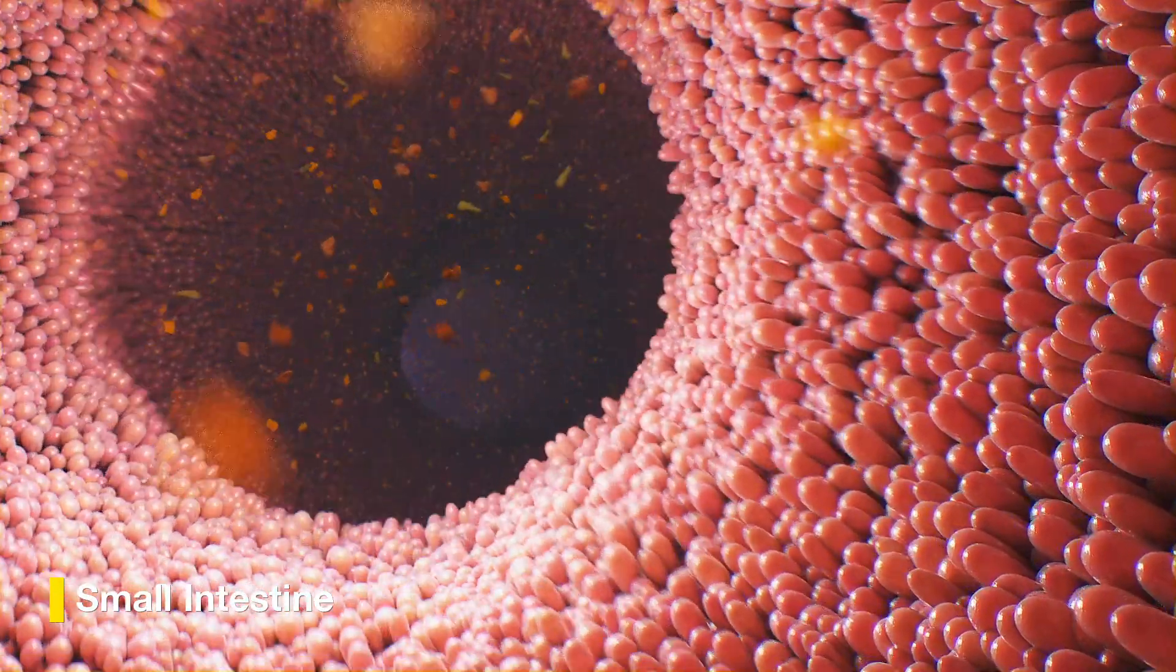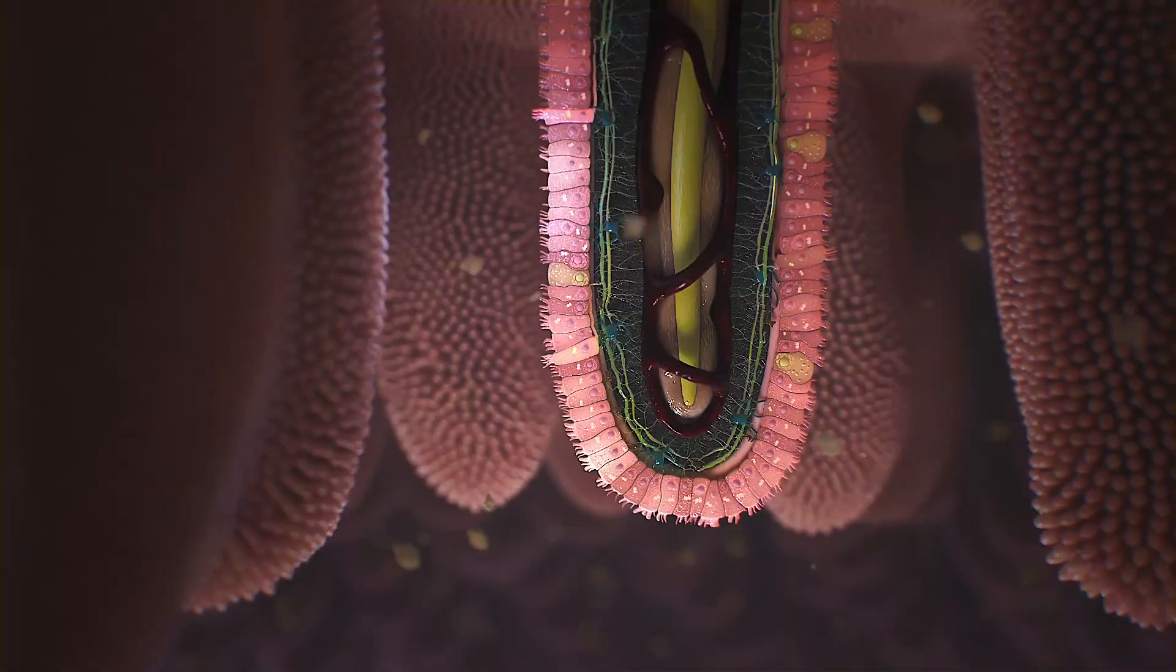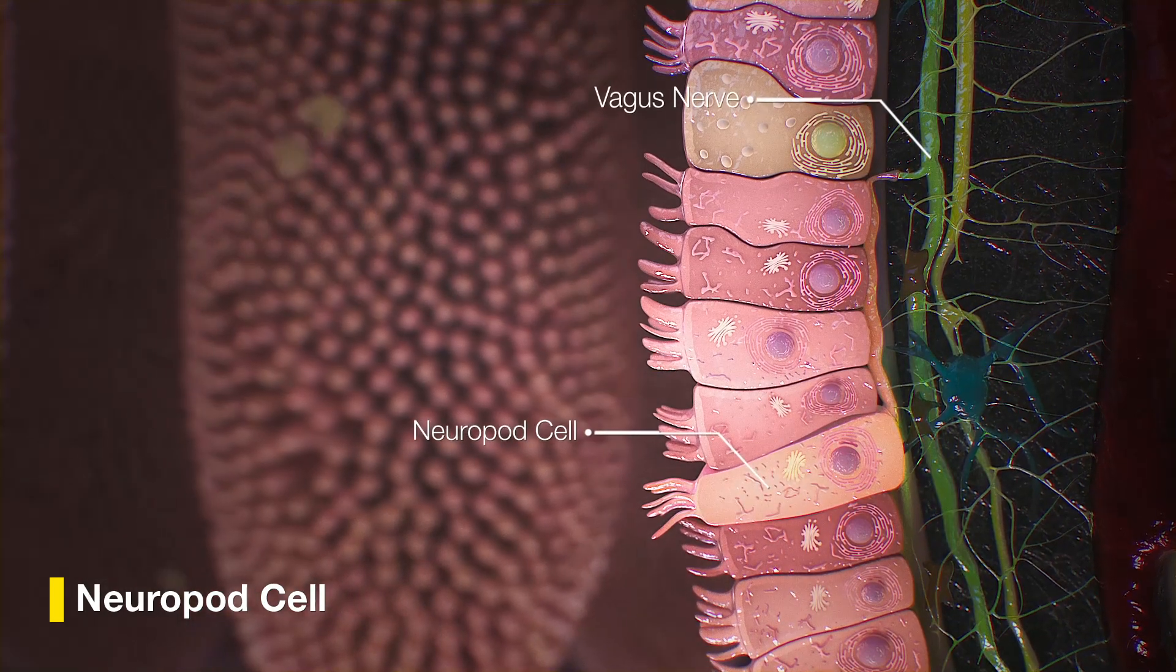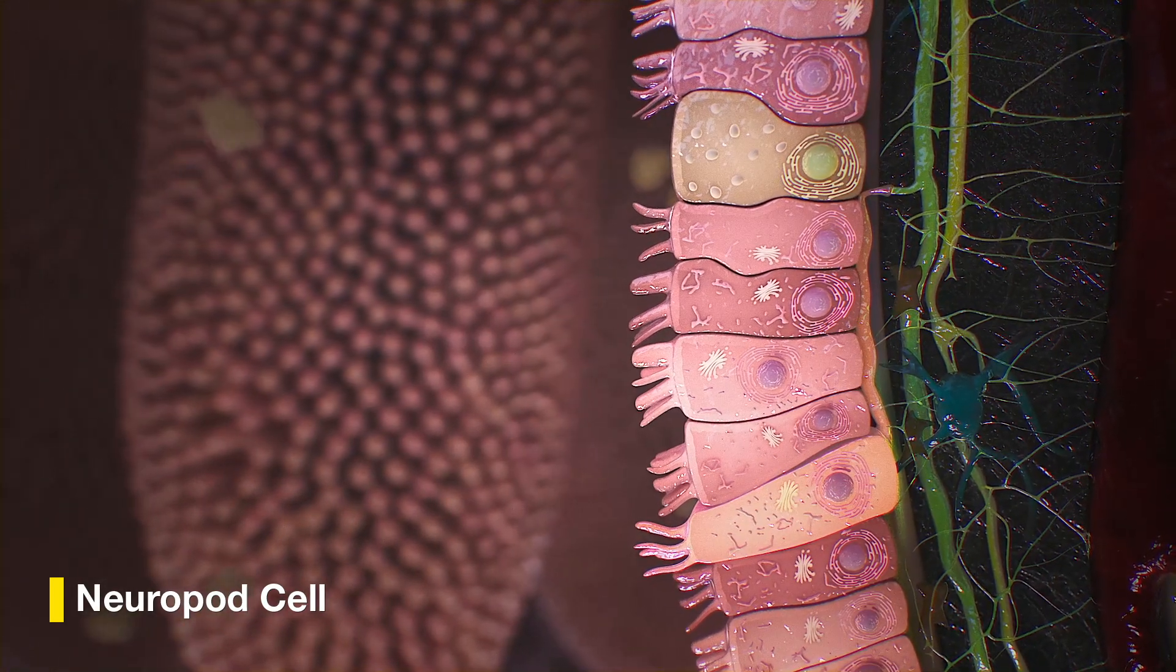When sugar molecules enter the intestine, they are recognized by sensory cells. One of these is the neuropod cell. Neuropod cells synapse with the vagus nerve to tell the brain about sugars entering the intestine in milliseconds.